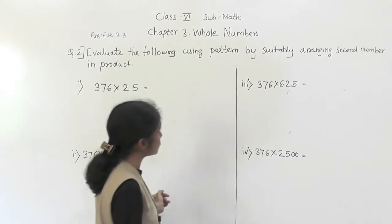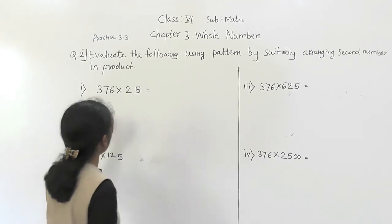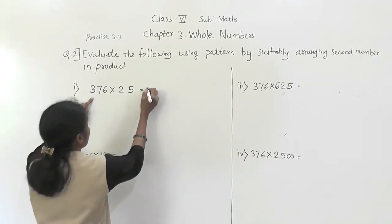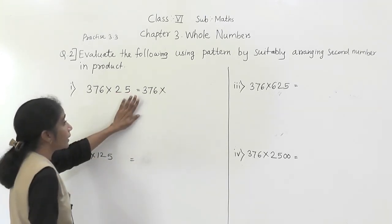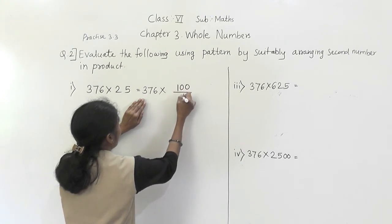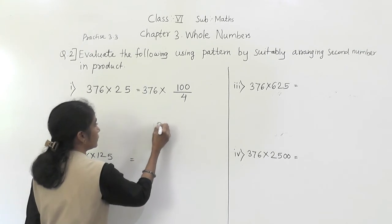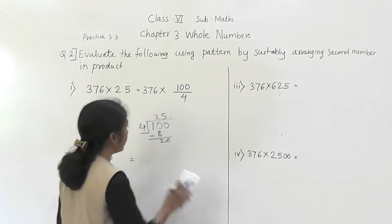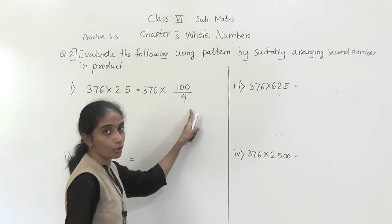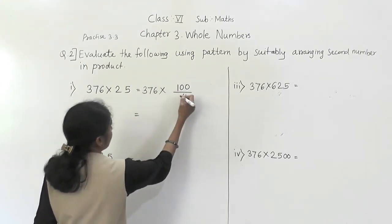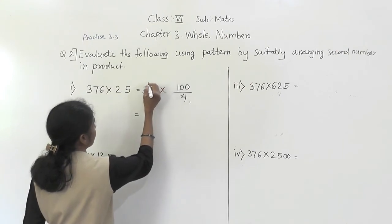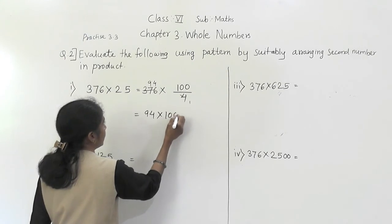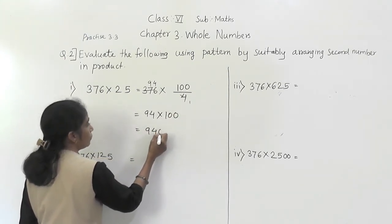Question 2: Evaluate the following using patterns by suitably arranging the second number in the product. For 376 × 25: since 25 = 100 ÷ 4, divide 376 by 4 — 4 ones are 4, 4 eights are 32, 4 ones are 4, 4 nines are 36, 4 fours are 16 — giving 94. Then 94 × 100 = 9,400.